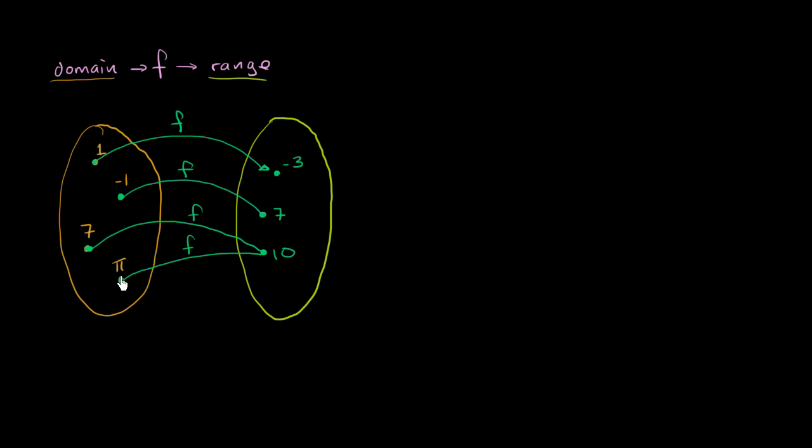But if you were doing some type of a relationship where you said, oh, well, if you put in a pi, sometimes it's a 10, and sometimes it's an 11. Now, this would not be a function, because you're mapping pi to two different values right over here. So that's not allowed if you're thinking about a function. For any input, you have to map it to only one output.